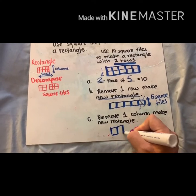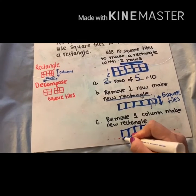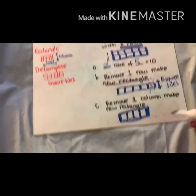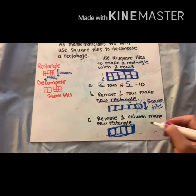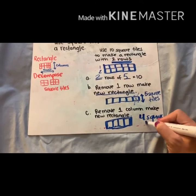So here we go. One, two, three, four. So that means that I have four square tiles now.